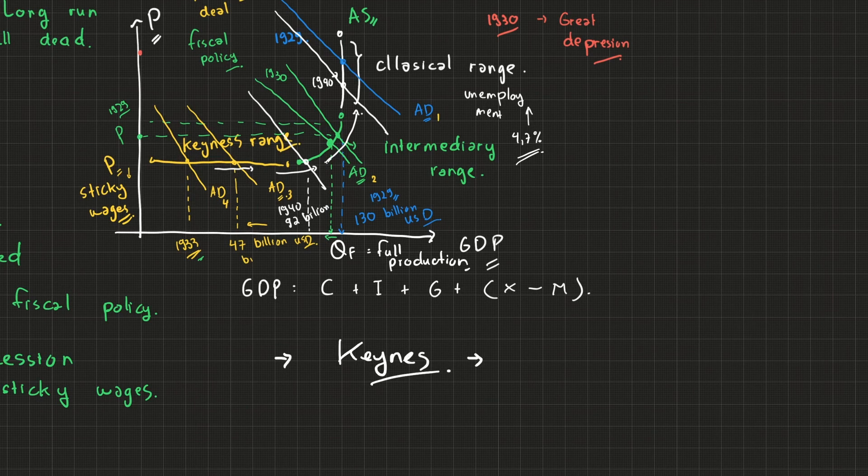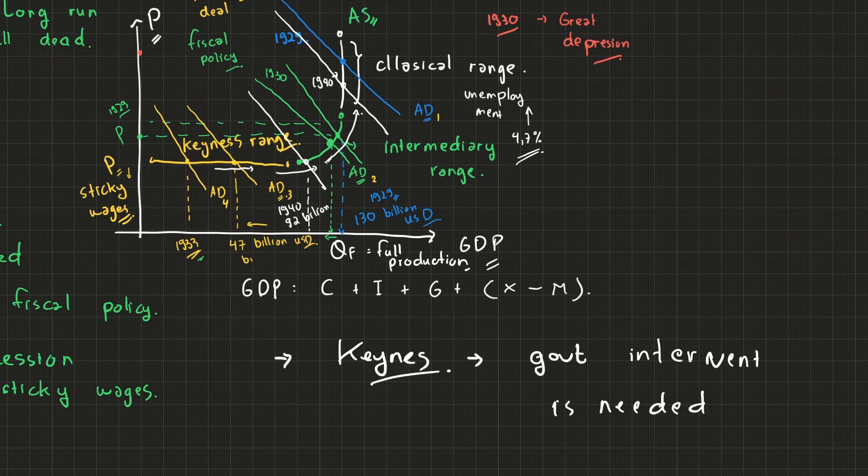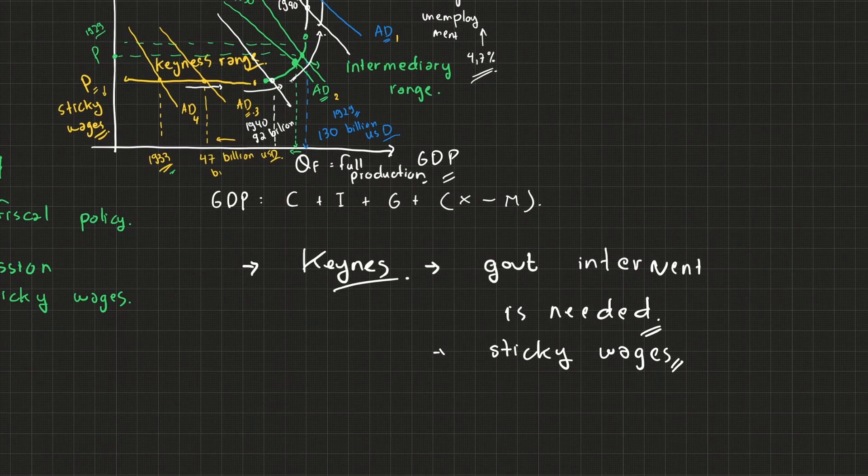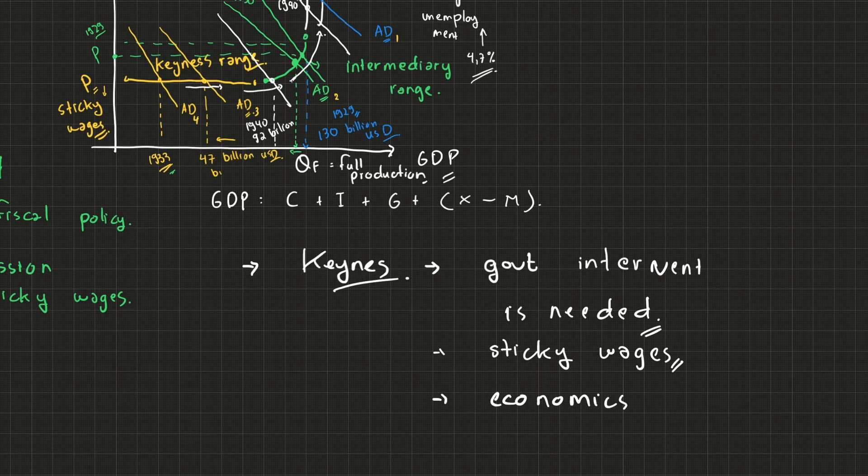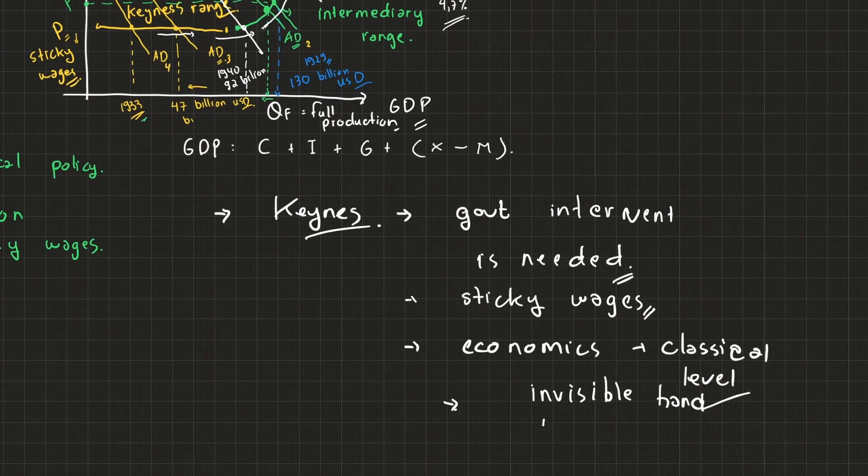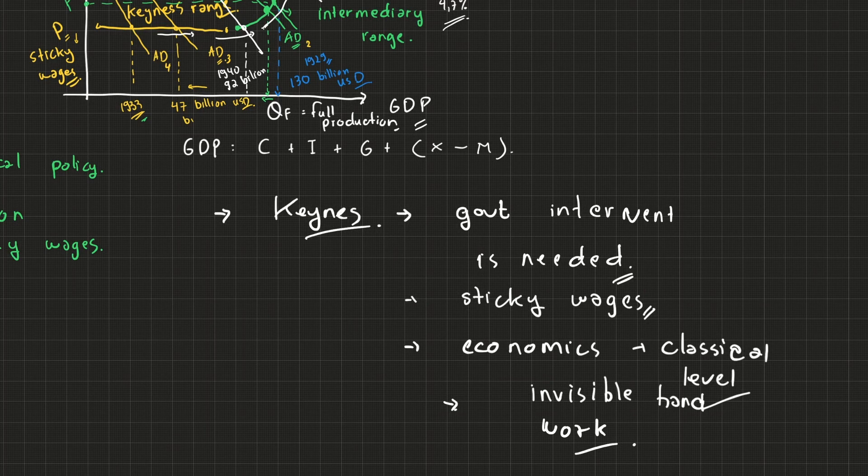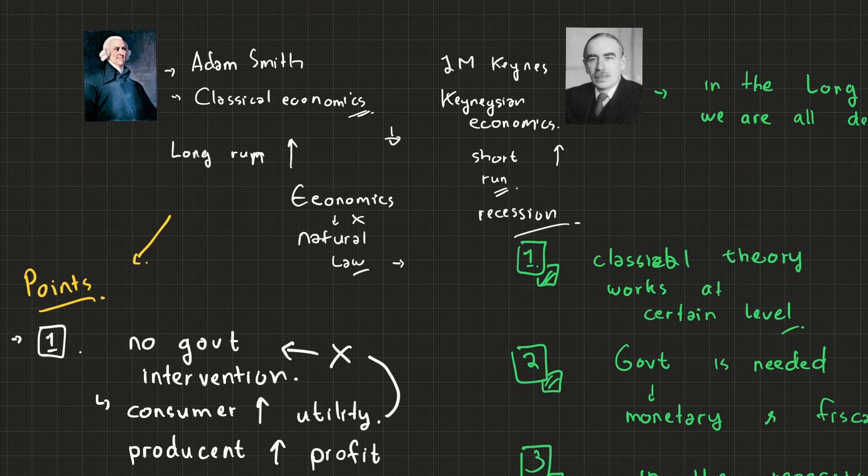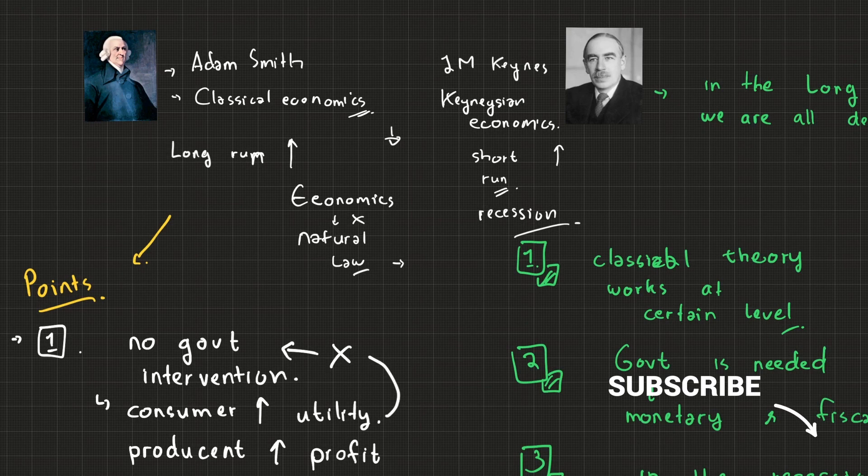So in Keynes, government intervention is needed to put the economy back, and we believe there are sticky wages that people basically don't want to earn less than some point. And when the economy goes back to classical level, then invisible hand could work again. So that's the difference between Keynesian and classical economy. I hope it's clear and explaining, and perhaps some of you are confused and have homework about it. Hopefully that could help. Thank you.